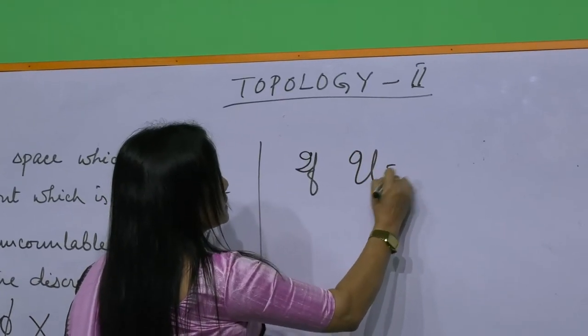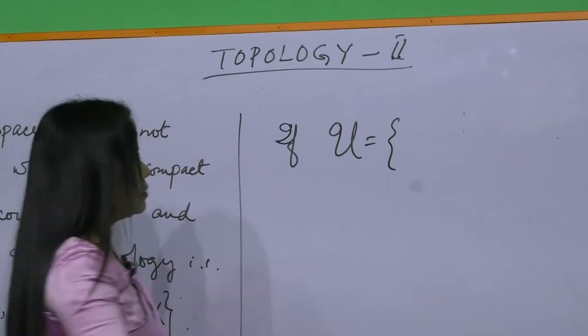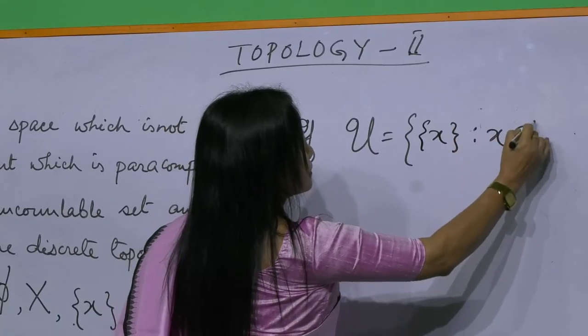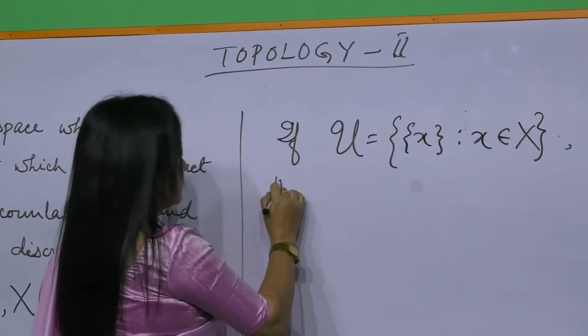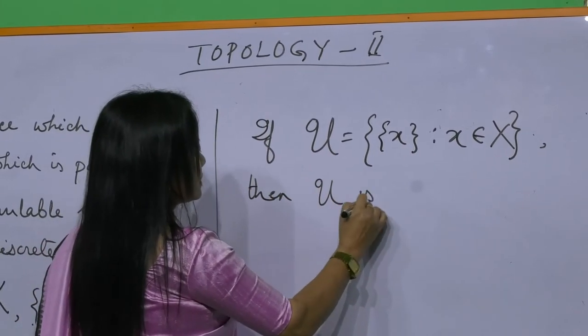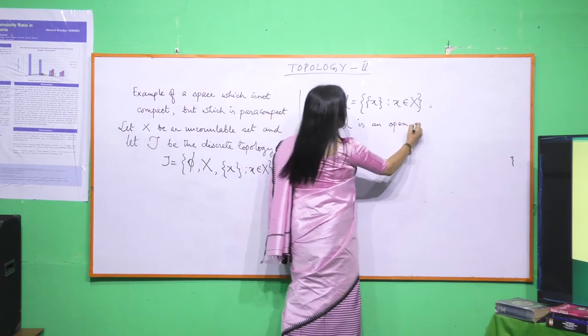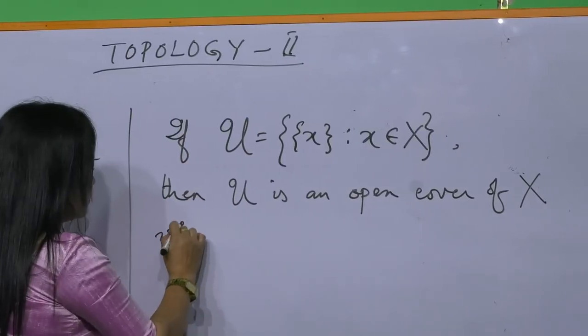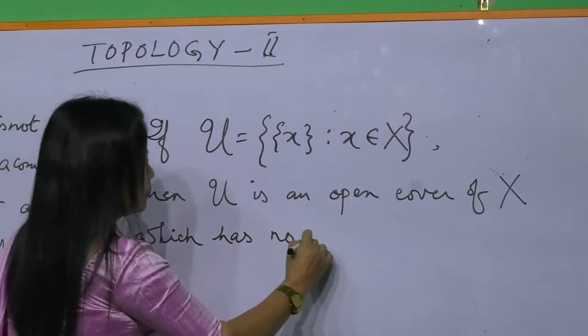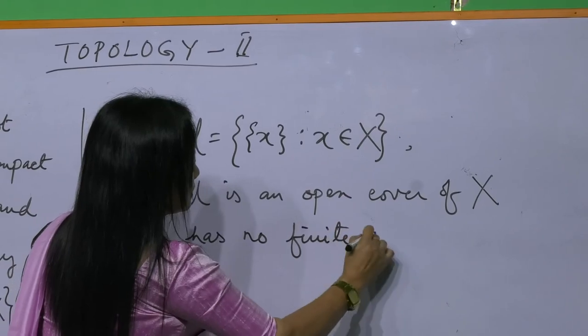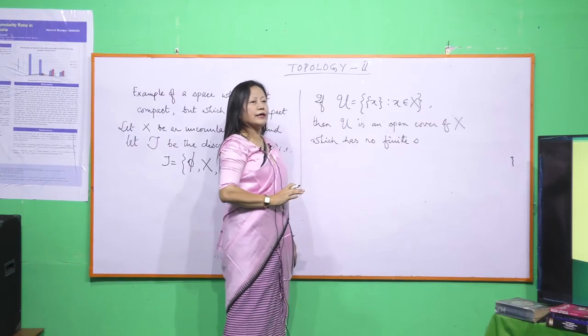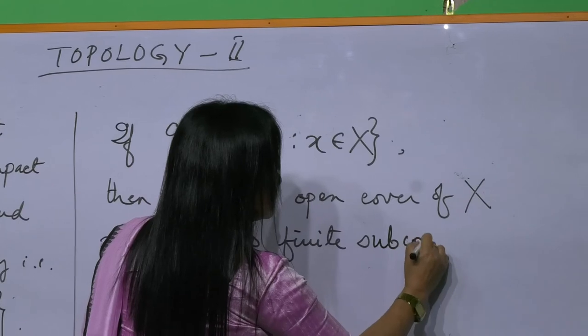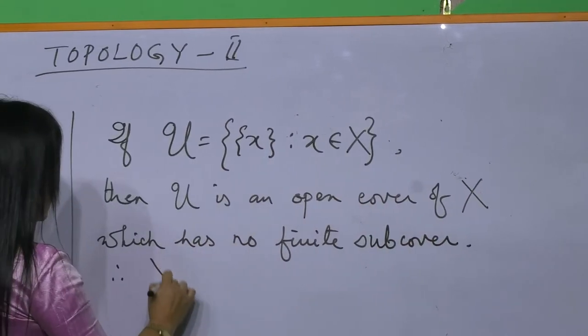If U is taken to be the collection of all the singleton sets of X, so if U is an open cover of X, then U is an open cover of X which has no finite sub cover. Because we are considering the set X to be an uncountable set and we know that uncountable set is infinite. This is no finite sub cover.